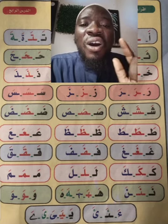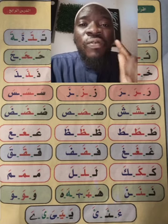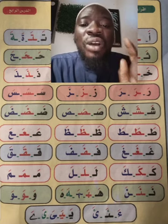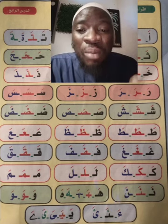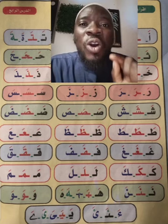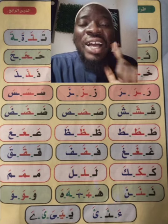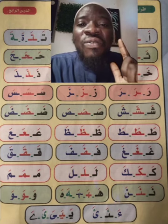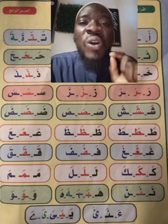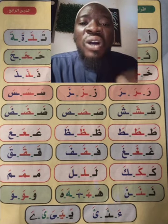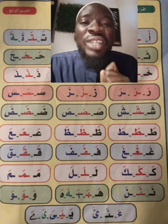The next letter is Fa, followed by Qaf. Fa and Qaf: for Fa it has one dot above, then Qaf has two dots. So Fa with Fathah: FA, FA, FA. Then Qaf with Fathah: QO, QO, QO.